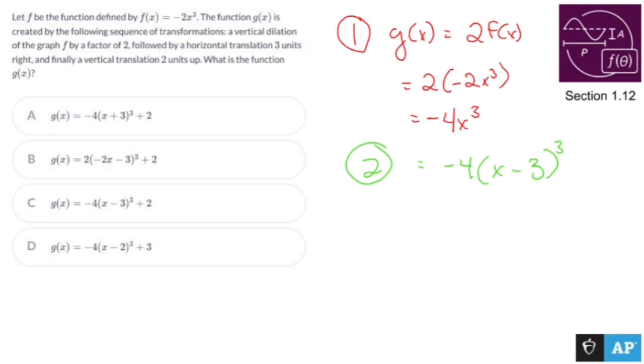Last but not least, and probably the easiest part, we're going to take this and move it two units up. So all we do is add two outside of the parentheses. So -4(x - 3)³ + 2, which happens to be C.